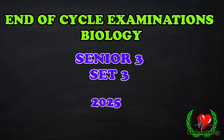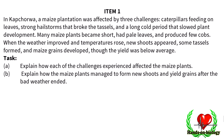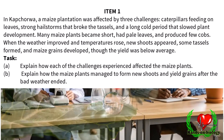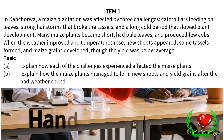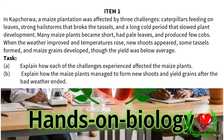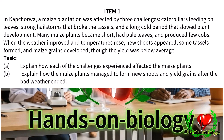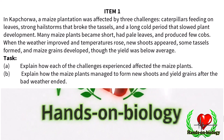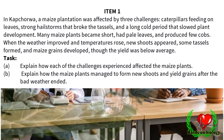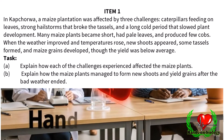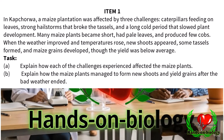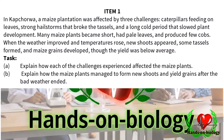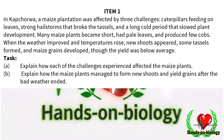End of cycle assessment. Item 1. In Kapjurwa, a maize plantation was affected by three challenges: caterpillars feeding on leaves, strong hailstorms that broke the tassels, and a long cold period that slowed plant development.